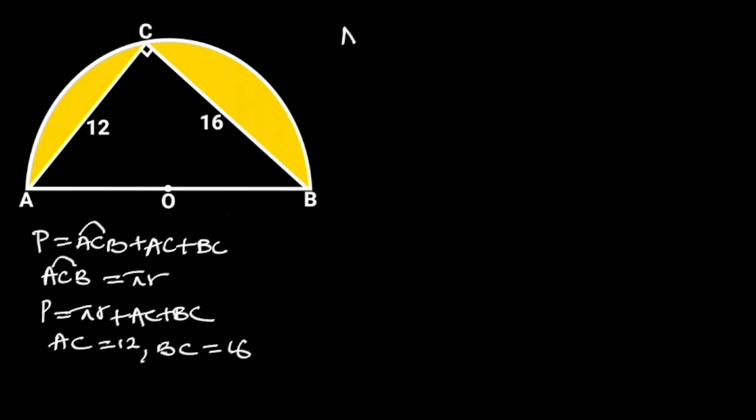To find the radius, let's focus on triangle ABC. Triangle ABC is a right triangle. From Pythagoras theorem, AB squared is equal to AC squared plus BC squared.